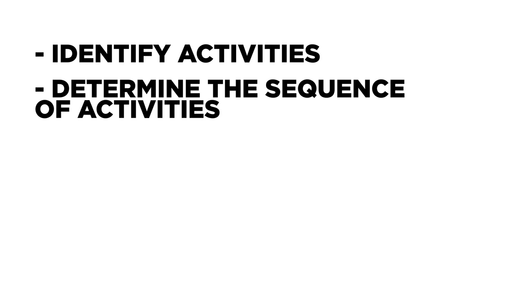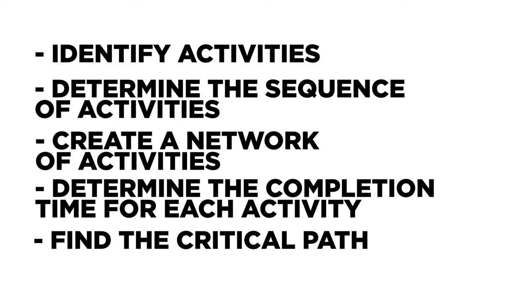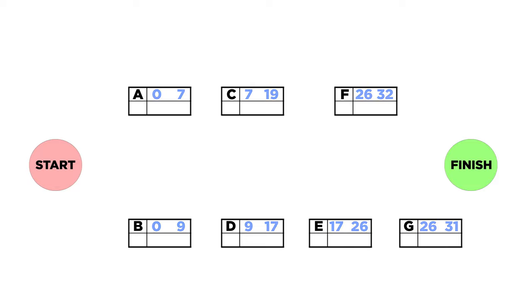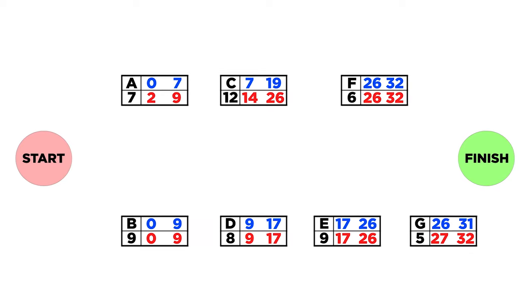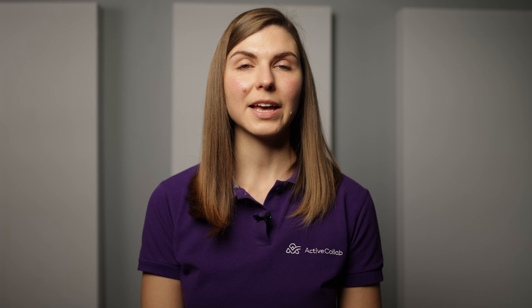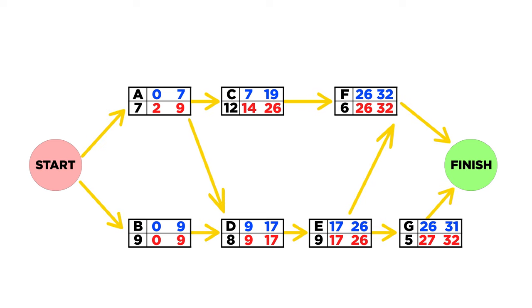The Critical Path Method consists of five steps: identify activities, determine a sequence of activities, create a network of activities, determine the completion time for each activity, and find the critical path. Let's go through them. Break down the project structure into a list of tasks and activities and determine the duration, time, and due date. Tasks that have nothing preceding them can start at any time. Some activities will depend on the completion of others. Putting them in the right sequence will give you a clear overview of their connection, and you'll be able to establish dependencies.